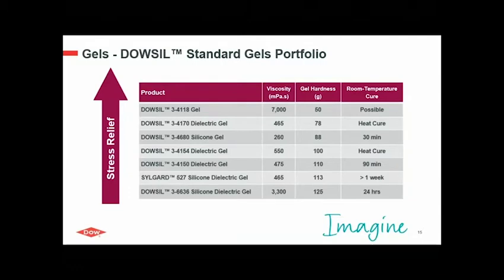This table shows a number of what we call standard gels. Most of them provide quite low viscosity and are audited in terms of hardness — or translated to stress relief. You can also see their different cure temperatures. Depending on your need and process, you might choose one over the other. You will get the slides later on, so we will not talk through each of these products individually, but you can have a closer look when you get the presentation.